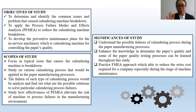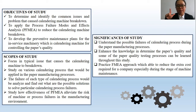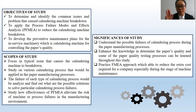There are four scopes of this study. First, focus on typical issues that cause the calendering machine to break down. Second, to study the various calendering processes applied in paper manufacturing. Third, the failure of each type of calendering process will be analyzed to find possible solutions. Fourth, to study the effectiveness of PFMEA in order to eliminate the risk of failure, especially in terms of process or machine.